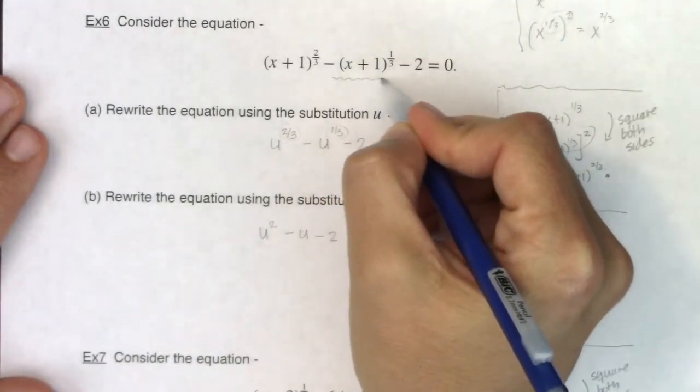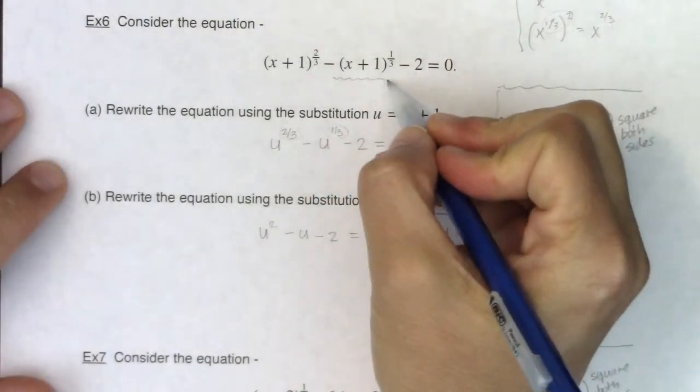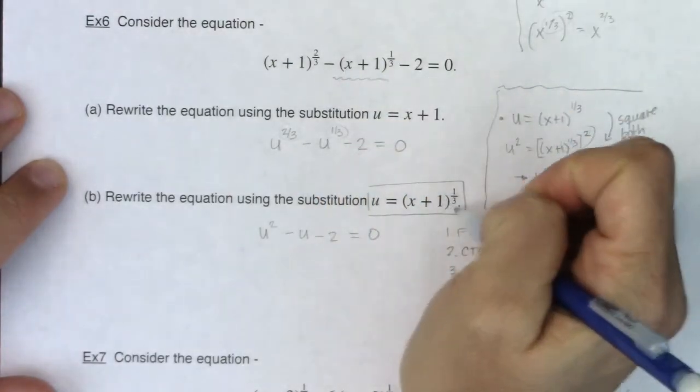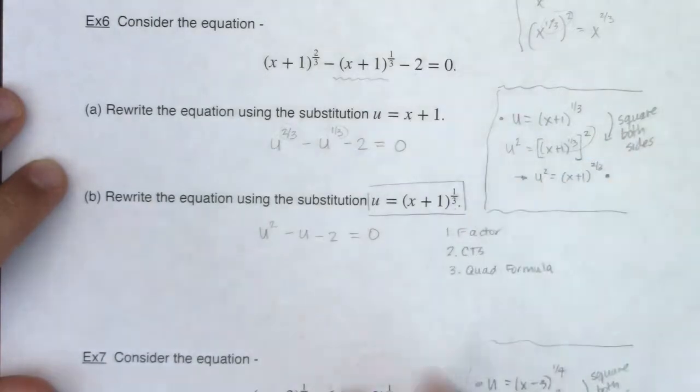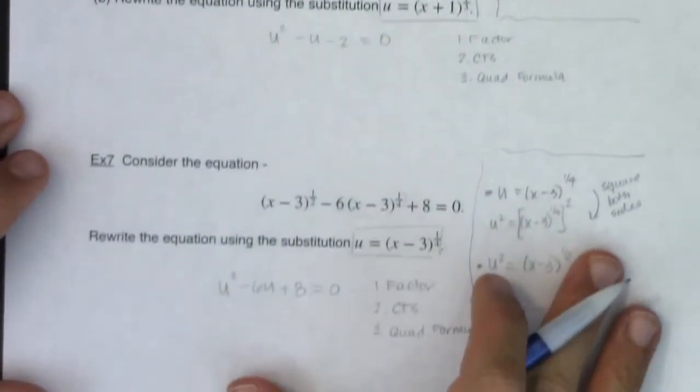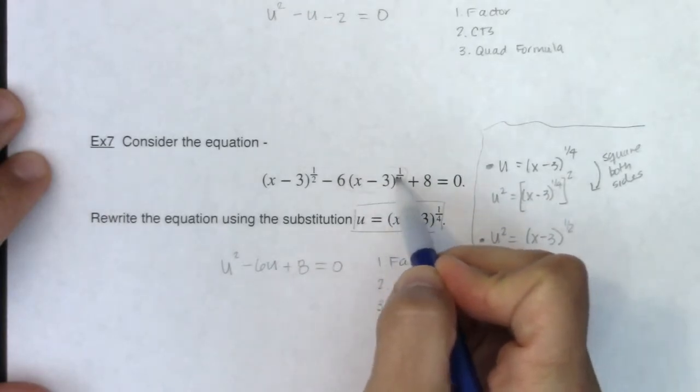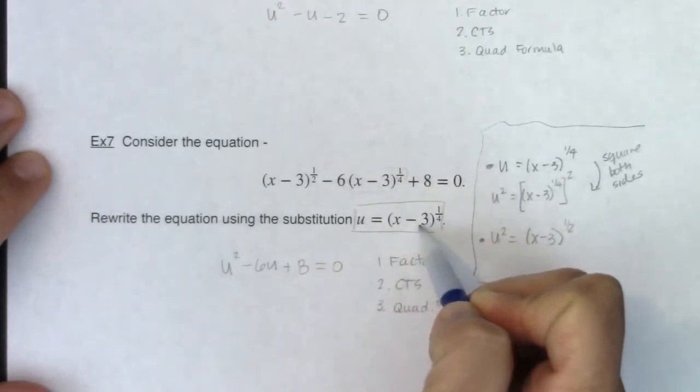Whatever the linear term or what will eventually be the linear term, whatever the middle term is. You see x plus 1 to the 1/3, that was my u substitution. And then if we come back down to example 7, x minus 3 to 1/4 was that middle term. That was my u substitution.